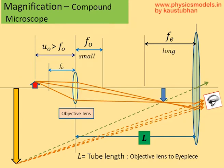Now, there are some additional dimensions here which we should note. The distance L is called the tube length. It is actually the effective tube length, the distance between the objective lens and the eyepiece lens.